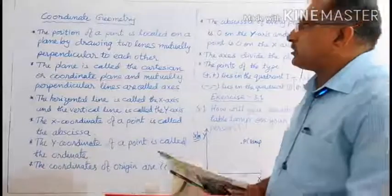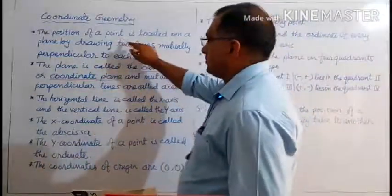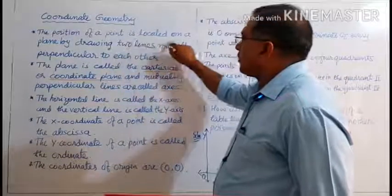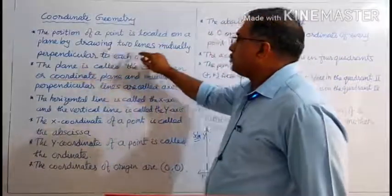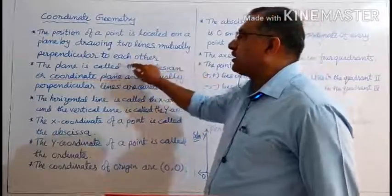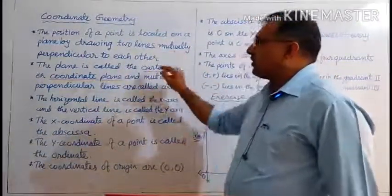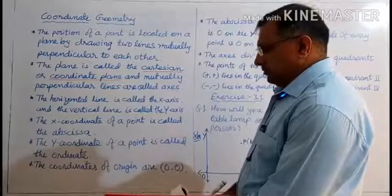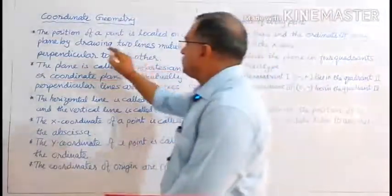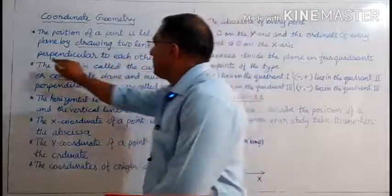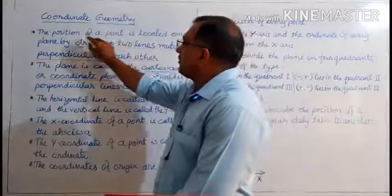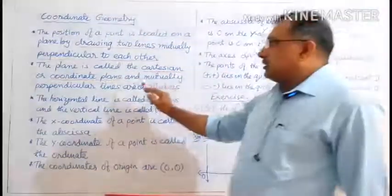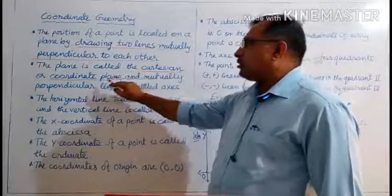In this chapter we will learn some new terms. The position of a point is located on the plane by drawing two lines mutually perpendicular to each other. When these two perpendicular lines are drawn, we find the position of a point located on that plane. The plane is called the Cartesian or Coordinate Plane.